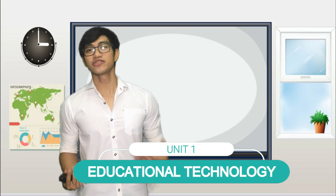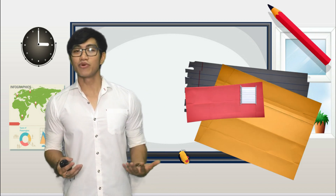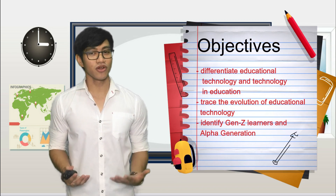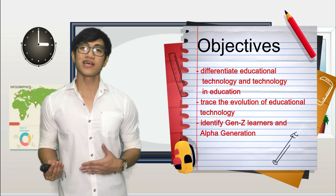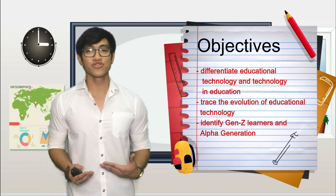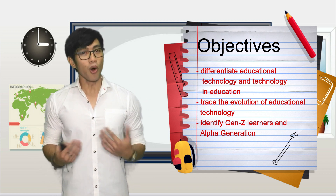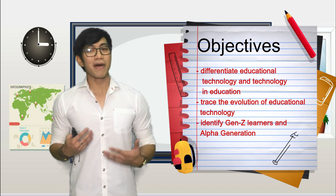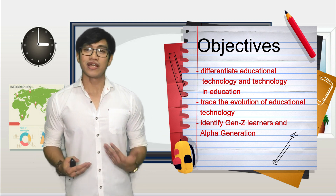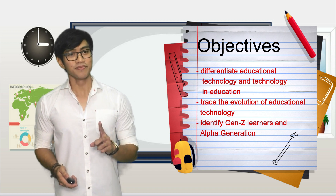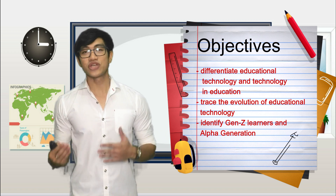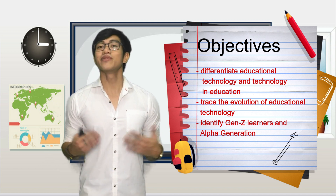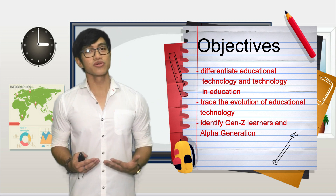we will talk about educational technology and technology in education. At the end of this unit, we will be able to first differentiate educational technology and technology in education with the paradigm shift from the 20th century to the 21st century Industrial Revolution 4.0. We will also be talking about the digital divide in the Philippines and internet addiction. Second, we will be able to trace the evolution of educational technology in relation with the changing curricular landscape in the Philippines and the world and Industrial Revolution 4.0.